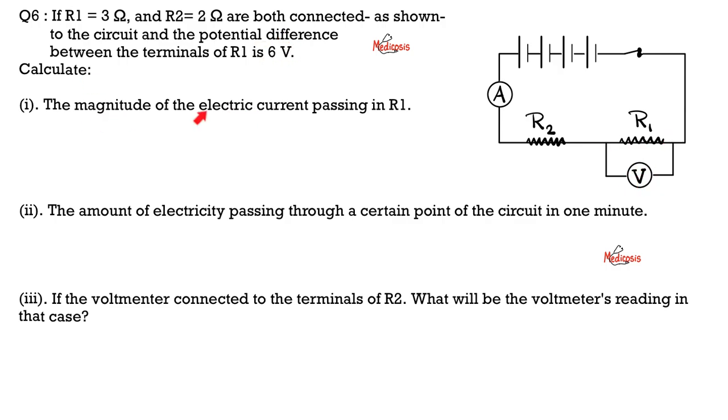Please calculate the magnitude of the electric current passing through R1, the amount of electricity passing through a certain point of the circuit in one minute. And if the voltmeter is connected to terminal 2 or R2 instead of R1, what will be the voltmeter's reading in this second case? Let me know your answers in the comments.